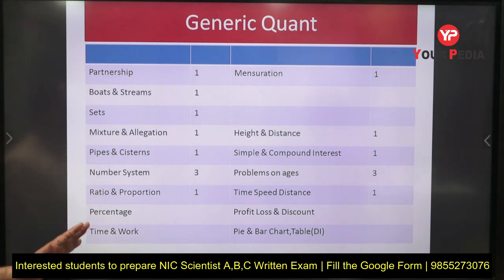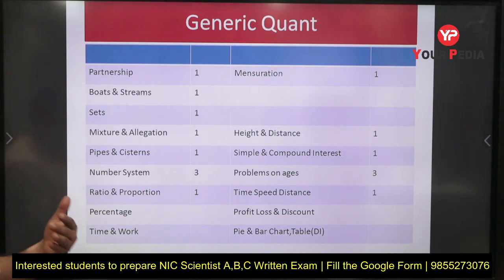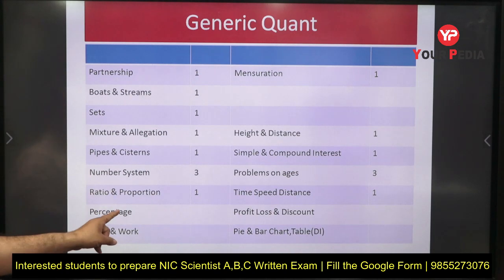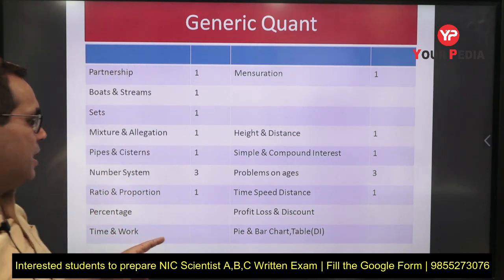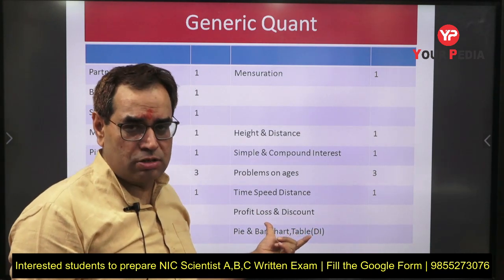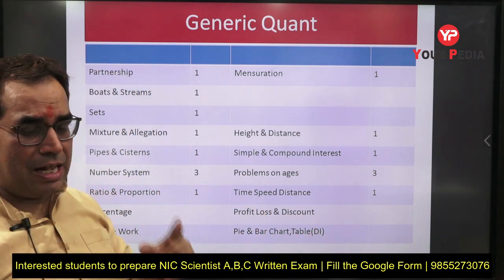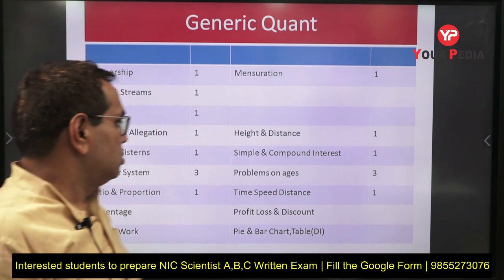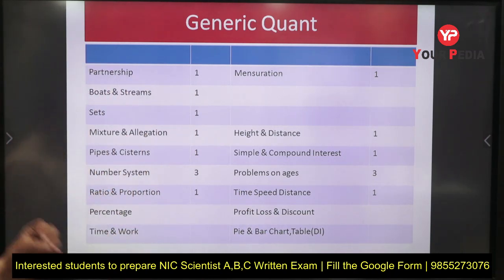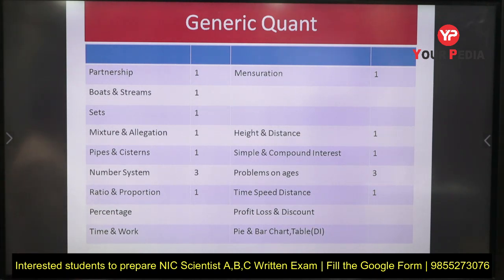Some very important topics were not asked in the previous paper but are still crucial to prepare: percentage, profit and loss, discount, time and work, pie chart, bar chart, table-based DI (Data Interpretation), and problems on trains. You must prepare all these topics, and reading them once will help you solve the aptitude section questions in the examination.